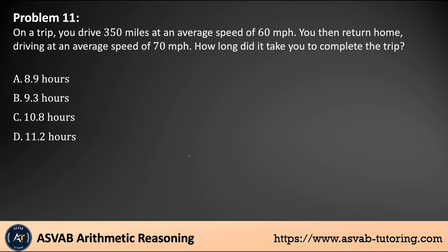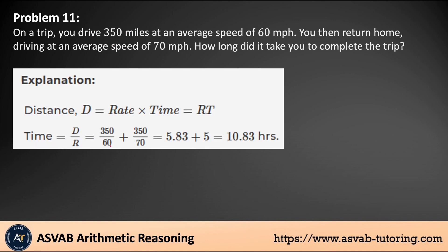Next problem: on a trip, you drive 350 miles at an average speed of 60 miles per hour, and then return home driving at an average speed of 70 miles per hour. How long did it take to complete the trip? Find how long each leg takes and add them. Divide 350 by 60, giving you 5.83 hours, and 350 divided by 70 gives you 5 hours. Add them up: that gives you 10.83 hours. That is the final answer.